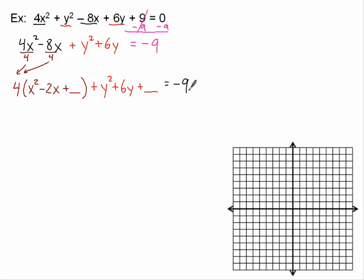Over here, I've got negative 9, but since I put two blanks on the left side, I better put two blanks on the right side. Now we go to complete the square. Half of this number is 1, 1 squared is 1, so that goes in that blank. Half of 6 is 3, 3 squared is 9, so that goes in that blank.